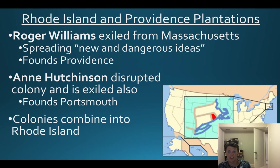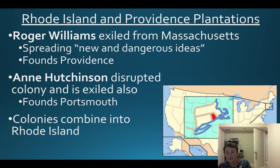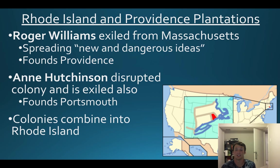One thing to add is Roger Williams - he's exiled from the Massachusetts Bay Colony over disagreements with Puritan leadership for his 'new and dangerous ideas.' He goes off and founds Providence. Additionally, Ann Hutchinson disrupts the colony - she's basically leading her own Bible studies in her house, but since she's a woman this is a no-go for the patriarchal Puritans. She's exiled and founds Portsmouth.